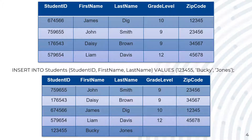INSERT INTO students, specifying only the student ID, first name, and last name, using the values 123455, Bucky, and Jones. The grade level and zip code part for this row would remain null until more information was added.